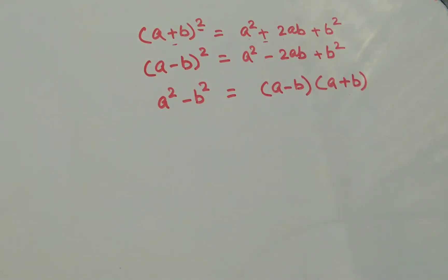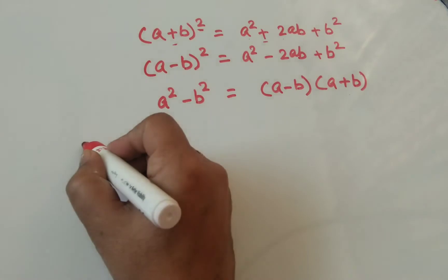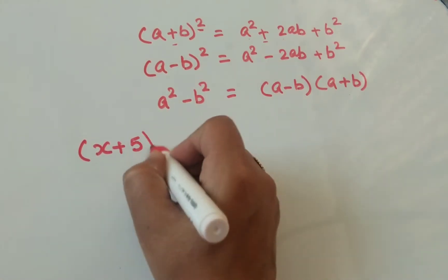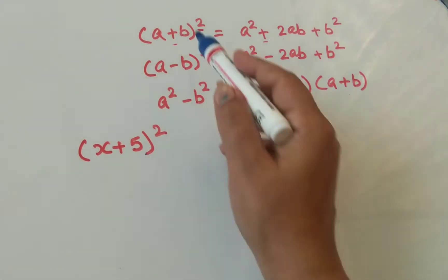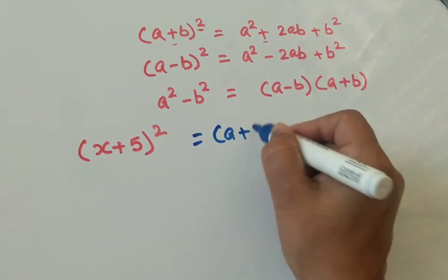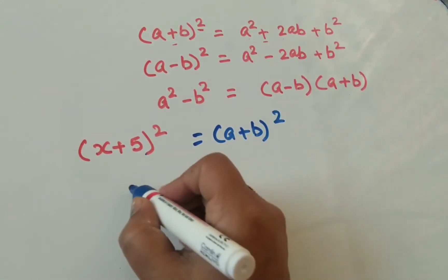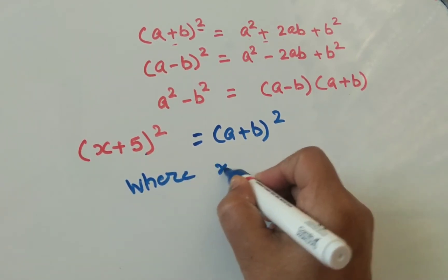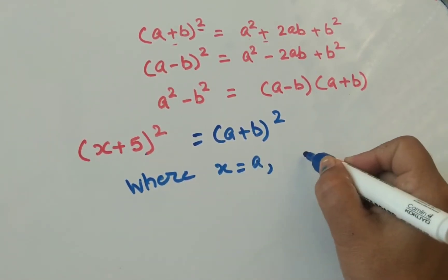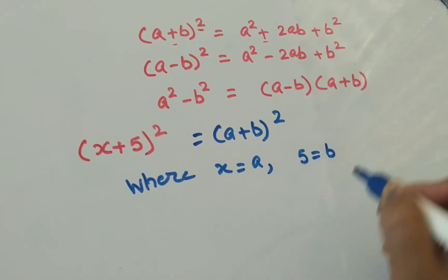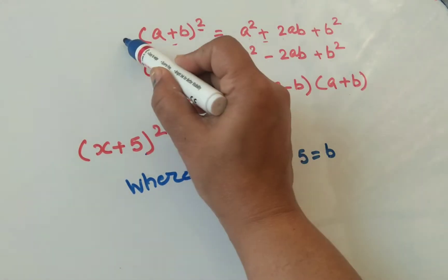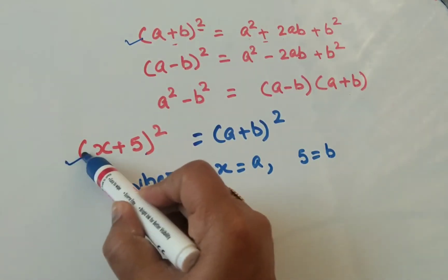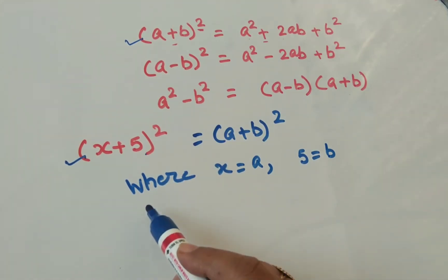Now we will discuss some examples. First example: let us suppose (x + 5) whole square. Here, your x is equal to a, because we are comparing it with (a + b) whole square, where x equals a and 5 equals b. So we will put values into the formula according to the identity.